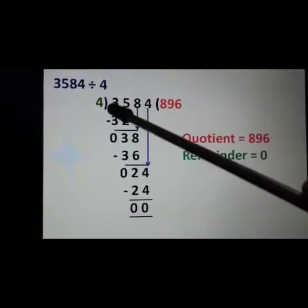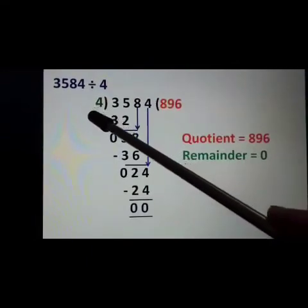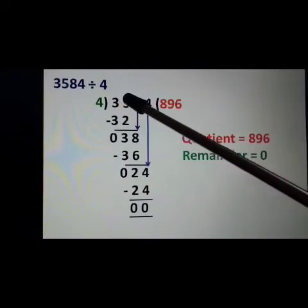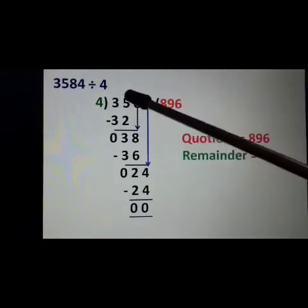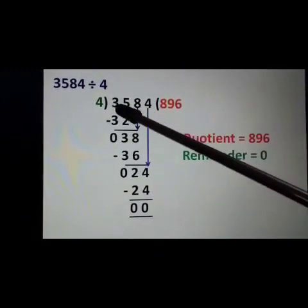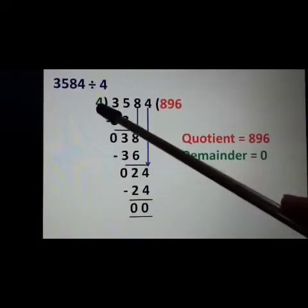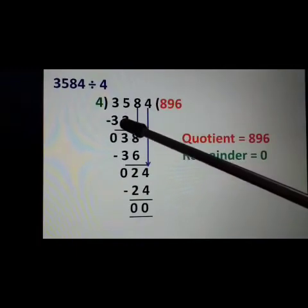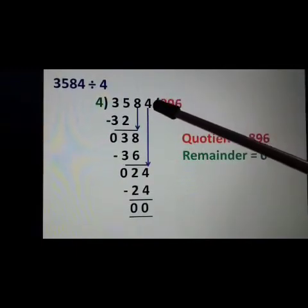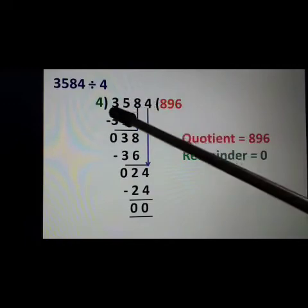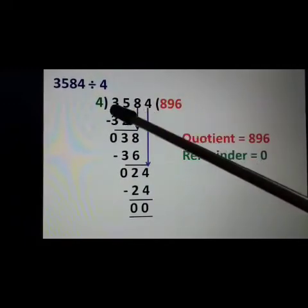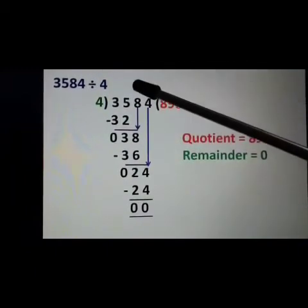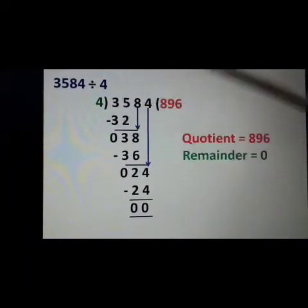Now our dividend is 35. Say the table of 4: how many times equals 35 or is smaller than 35? 4 eights are 32 and 4 nines are 36, which is greater than 35. So we will take the 8th step: 4 eights are 32. We will subtract 32 from 35: 5 minus 2 is 3 and 3 minus 3 is equal to 0. The remainder is always smaller than the divisor.